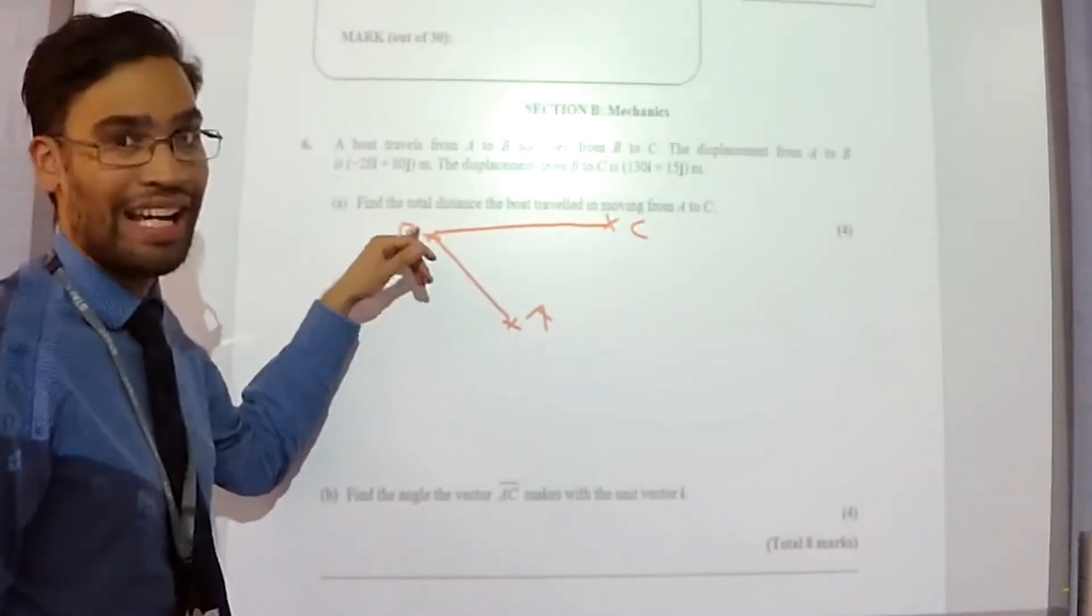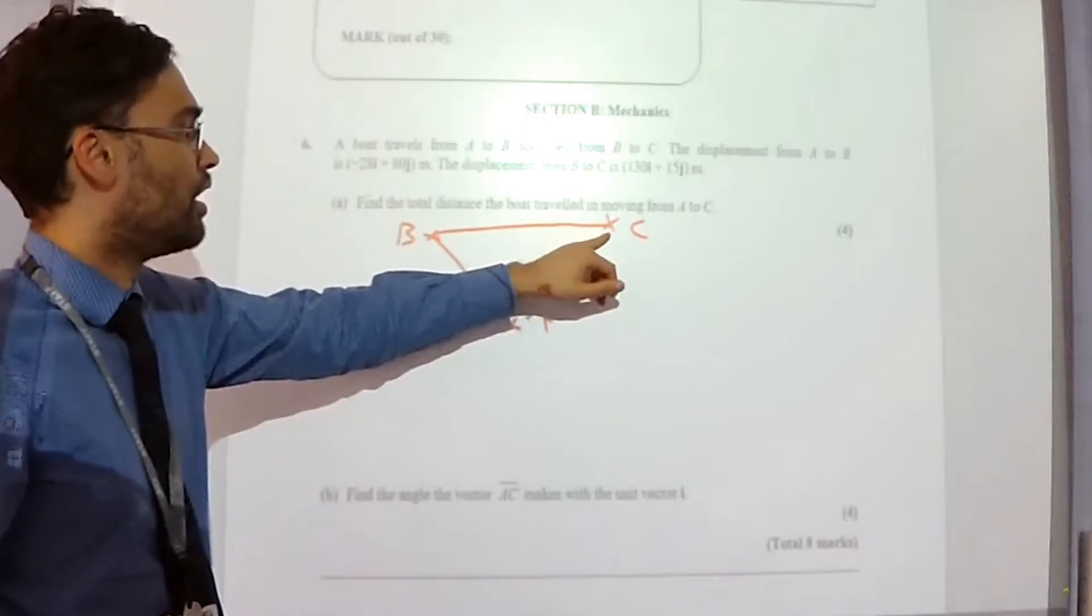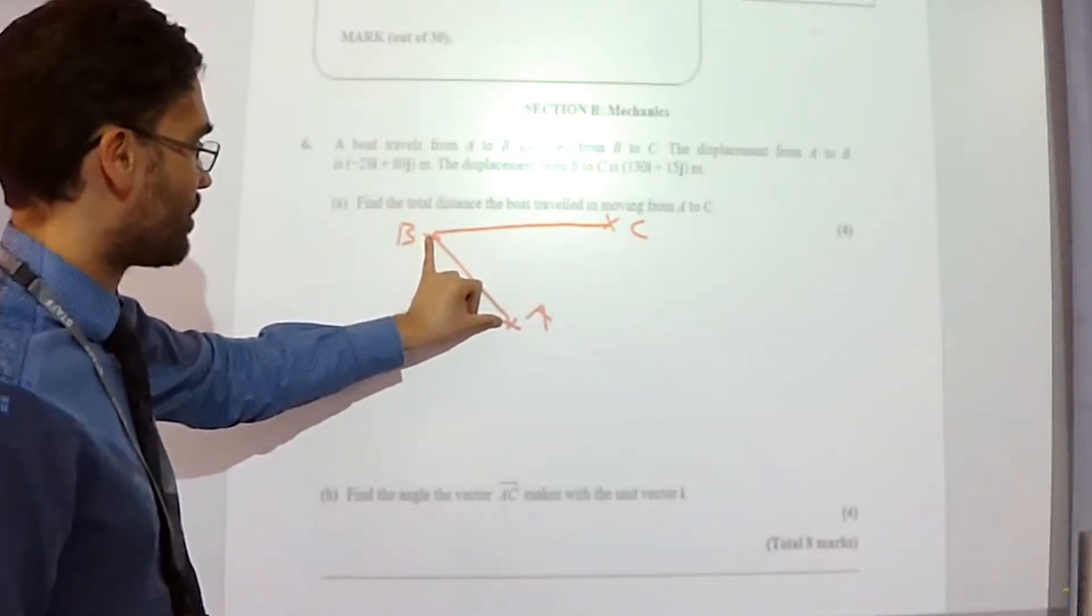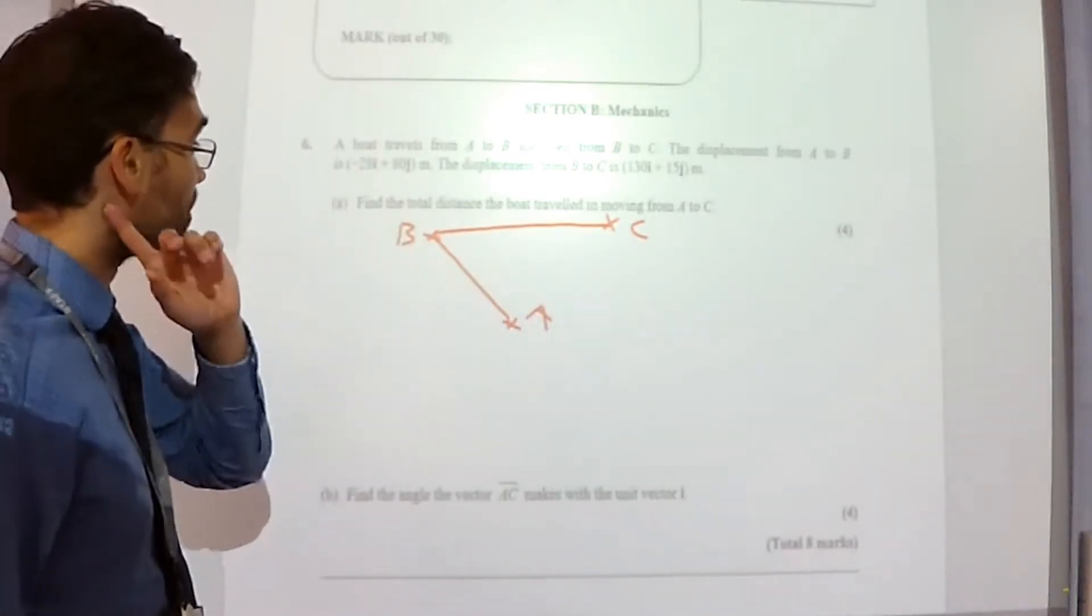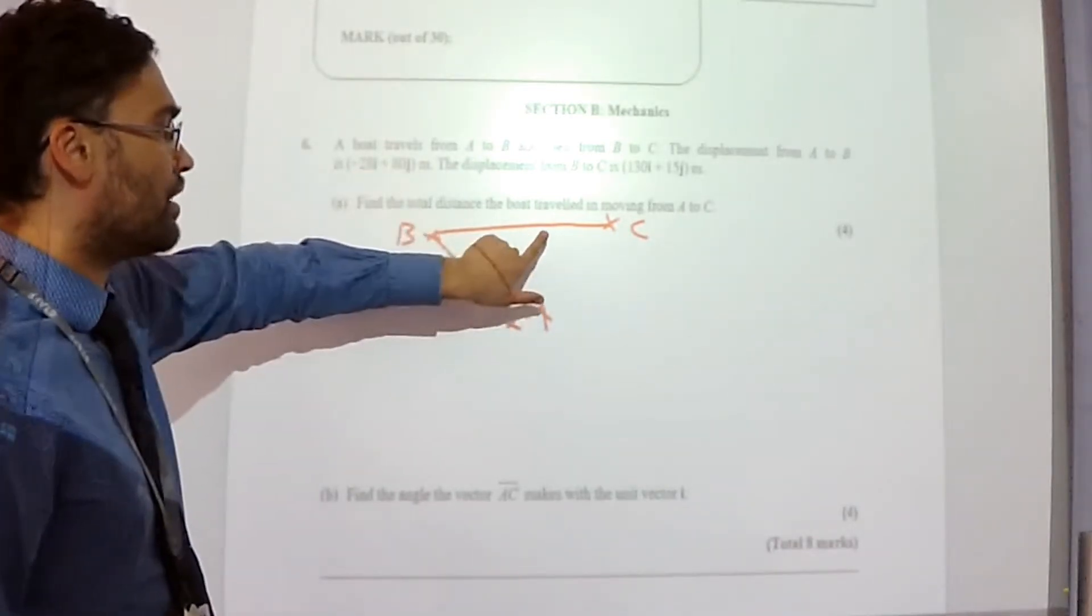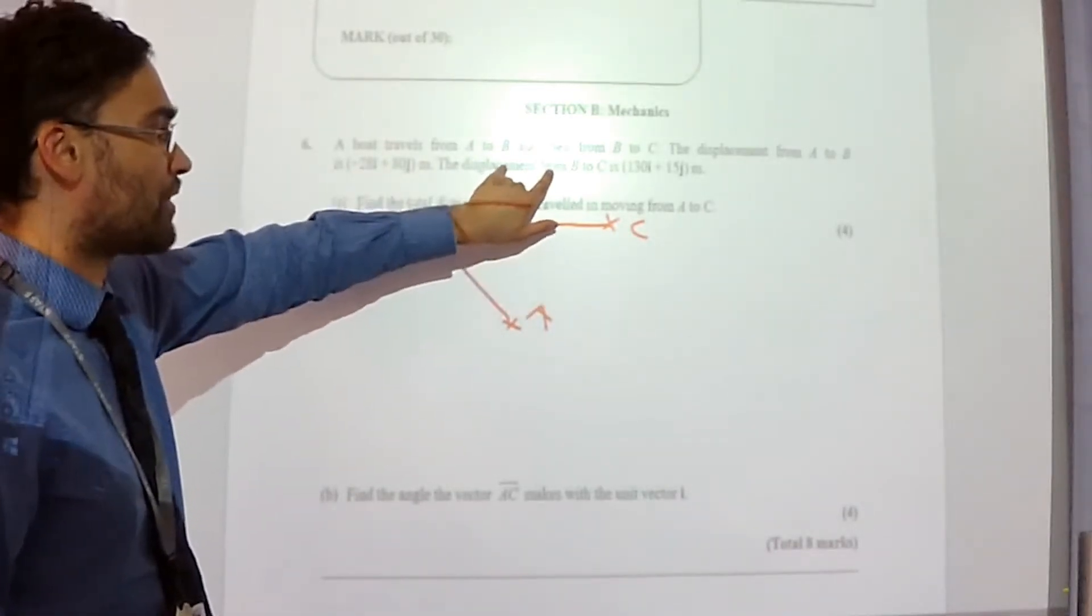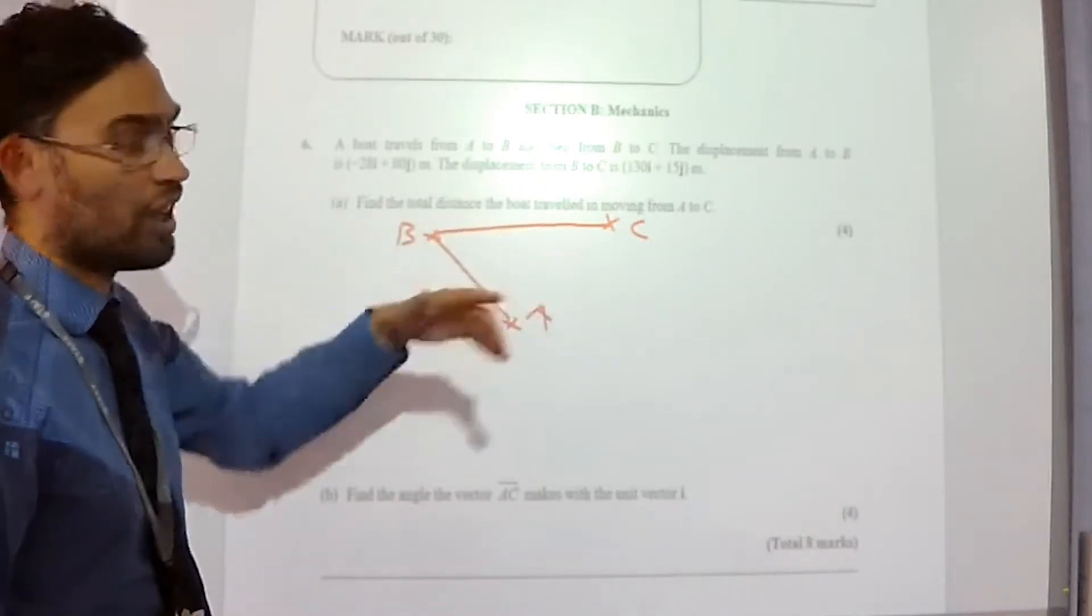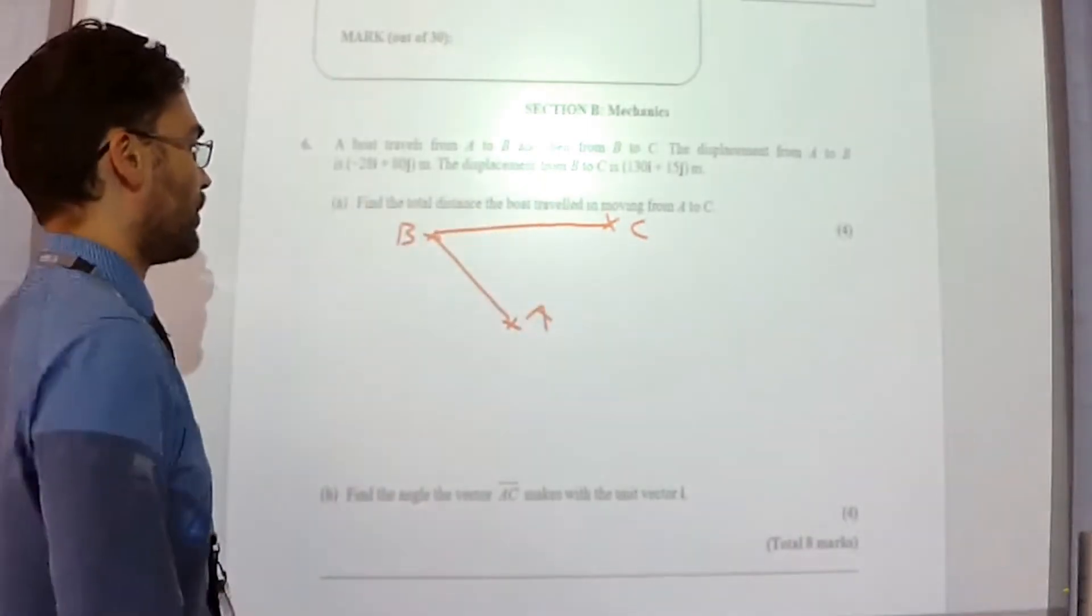So that's the distance from A to B and the distance from B to C. So if we work out this distance I'm going to have to use Pythagoras' theorem on this displacement vector and also Pythagoras' theorem on this displacement vector to get those two magnitudes and then add them together.